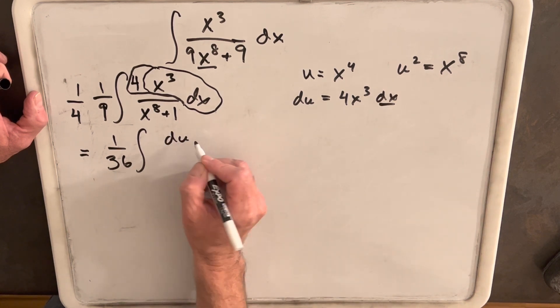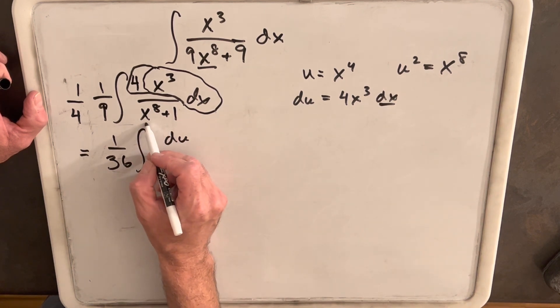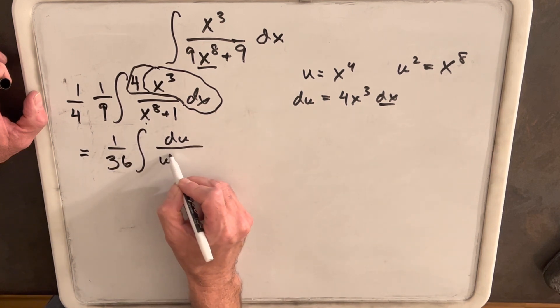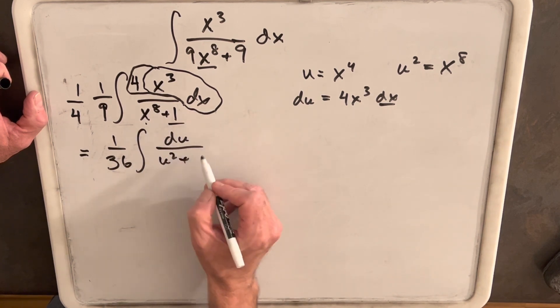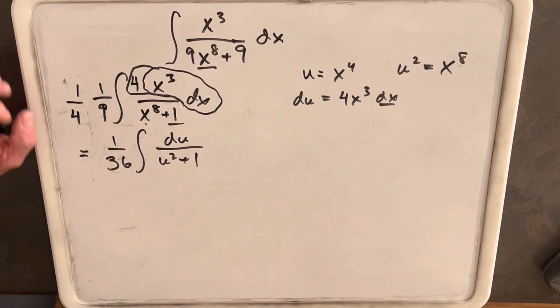So, we're going to have du in the numerator. x to the eighth is going to be u squared. Then, we get our one plus one. Then, this is the familiar integral. This is actually inverse tangent.